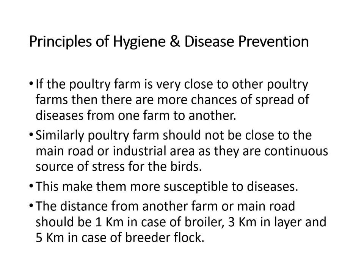Proximity to another farm or main road makes birds more susceptible to diseases. The recommended minimum distance from another farm or main road should be 1 km in the case of broiler, 3 km in the case of layer, and 5 km in the case of breeder flock. This maximum distance should be kept in mind when establishing a farm near another poultry farm, main road, or breeder flock.